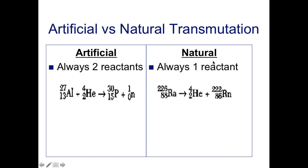Natural transmutation, on the other hand, only has one reactant. When we look at this reaction example, we only have one thing on the left of our arrow, so we only have one reactant.